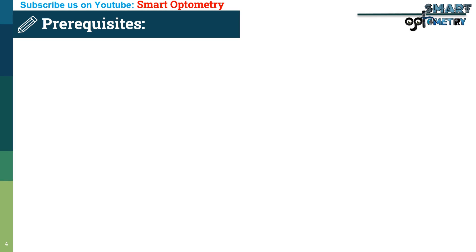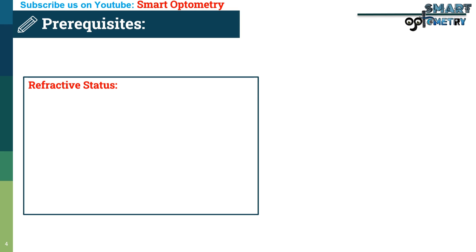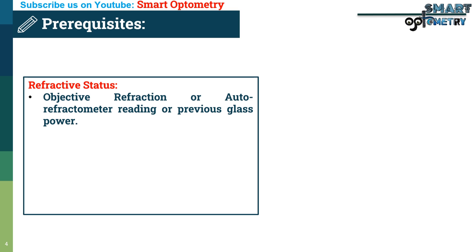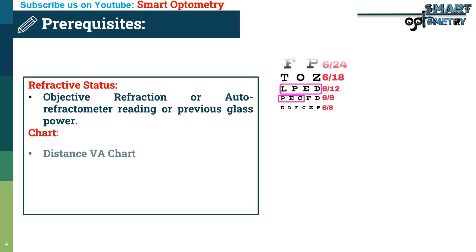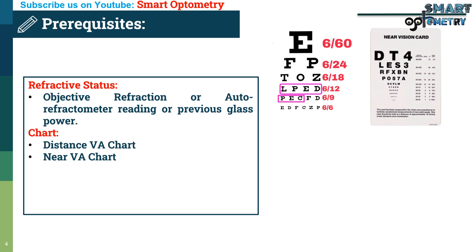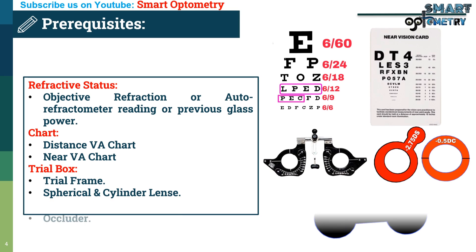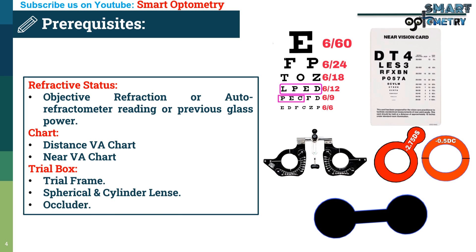The requirements for the test include: refractive status, obtained via objective refraction, autorefractometer reading, or previous glass power; a distance visual acuity chart and a near visual acuity chart; and a trial box containing a trial frame, spherical and cylinder lenses, and an occluder.